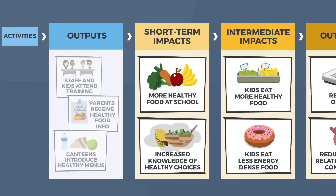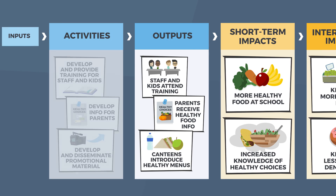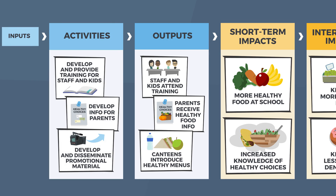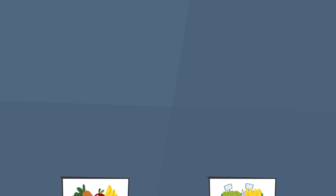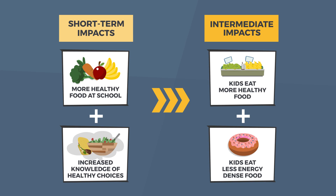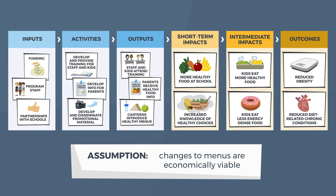Next, decide what products and services need to be provided to achieve these outcomes. Then think about the activities that are needed to generate these outputs. Next, identify what resources are needed to deliver these activities. Lastly, review the logic underlying the program, and identify and test any assumptions made.